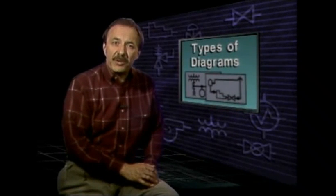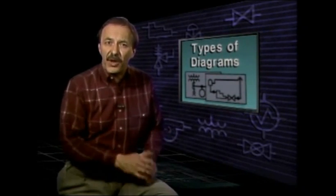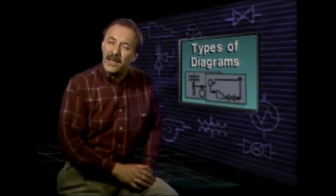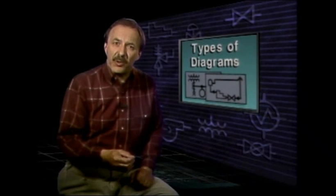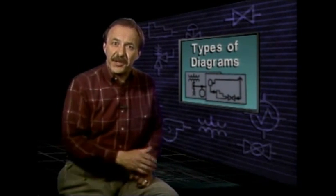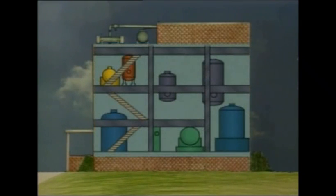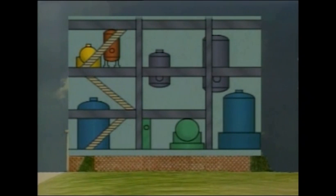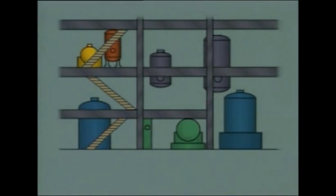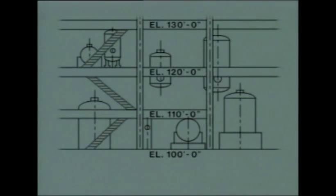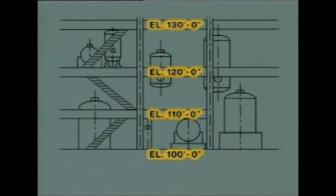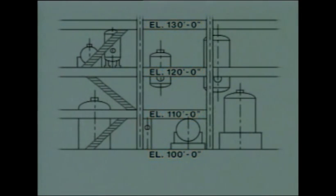Another diagram that shows equipment locations is an elevation drawing. An elevation drawing shows where equipment is located on different levels in a facility. Looking at an elevation drawing is like removing a wall and seeing a side view of the equipment on different levels. The location of each piece of equipment is shown in reference to a measurement called an elevation. Sea level is commonly used as a reference or starting point for elevations because ground levels can change.